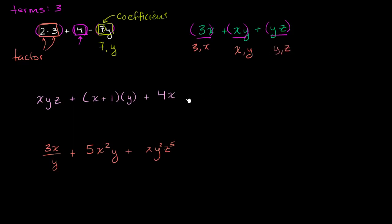Now what are the coefficients here? Remember, a coefficient is a non-variable multiplying a bunch of other variables. So the coefficient in the first term right over here is a 3. Now you might ask, what about the coefficients on the other terms? Well, xy is the same thing as 1 times xy. So some people would say you have a coefficient of 1 on the xy — it's implicitly there, meaning you're multiplying everything by 1, though that may be subject to some interpretation.